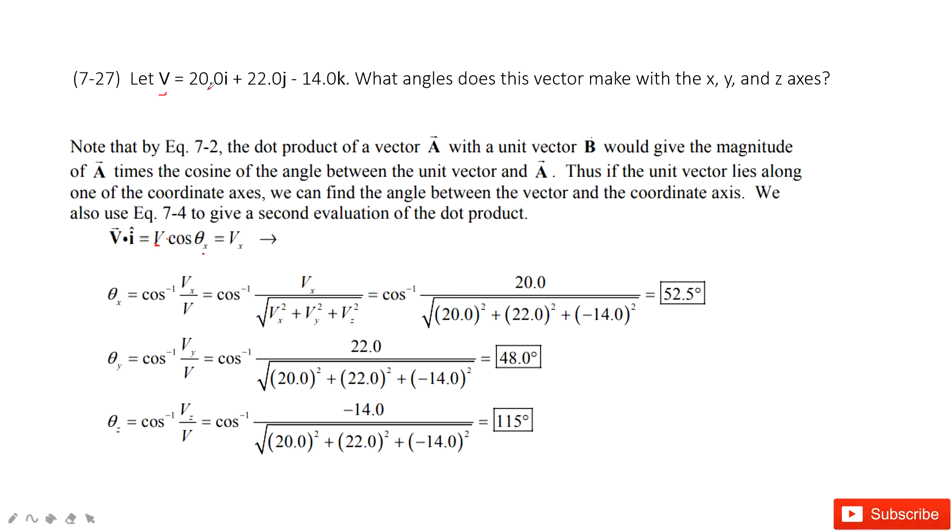So vx is given as 20.0, and v is the magnitude of this vector. We use this equation to find the magnitude. Therefore, we can get theta x.